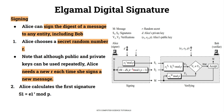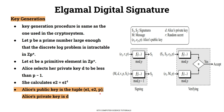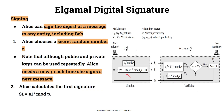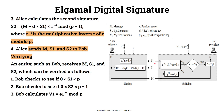Alice's first signature component is S1. S1 is evaluated as E1 raised to R, mod P. E1 is the public key element, P is the public prime, and R is Alice's secret random value. The first signature component S1 equals E1 raised to R mod P.